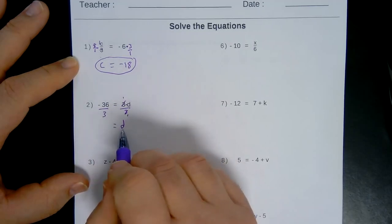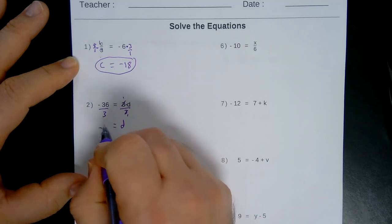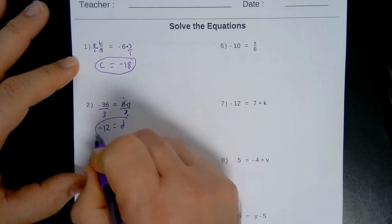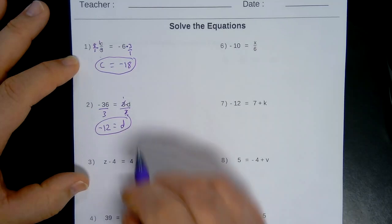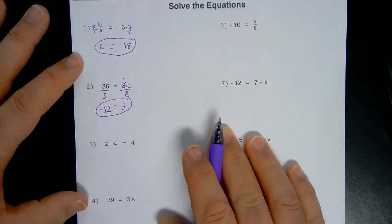Now you get D on the right, equal sign, kind of going backwards here, equals negative 12. Final answer. Get into a good habit of circling your final answer. It's always a great thing to do.